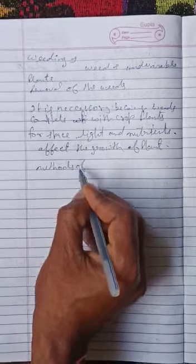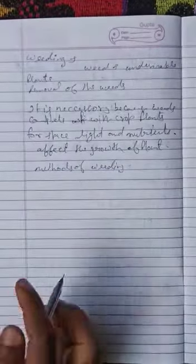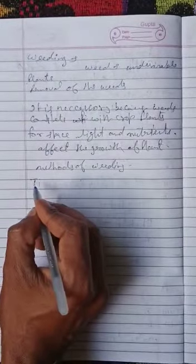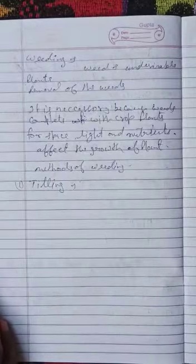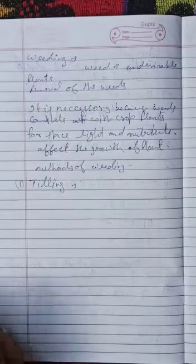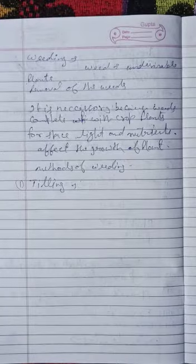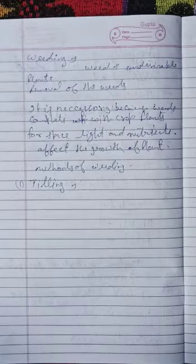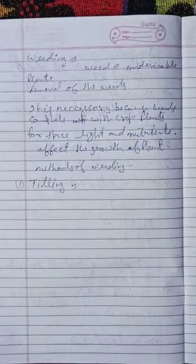Methods of weeding. First method is tilling. Tilling before sowing is done to uproot weeds. Weeds ko जड़ों से उखाड़ने के लिए यह process किया जाता है.